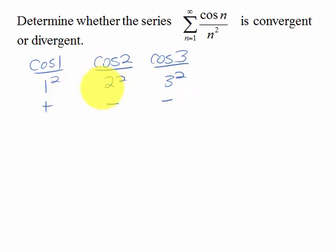And so it's not an alternating series, but we can still consider what would happen if we took the absolute value, and we could put it just on the cosine because we know that n squared is always positive.